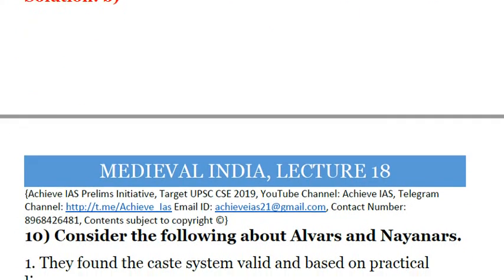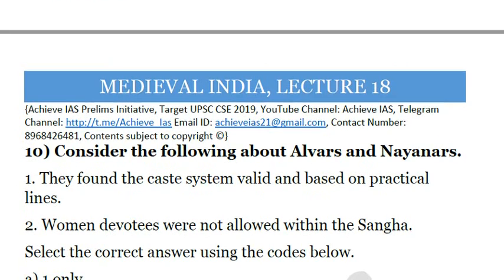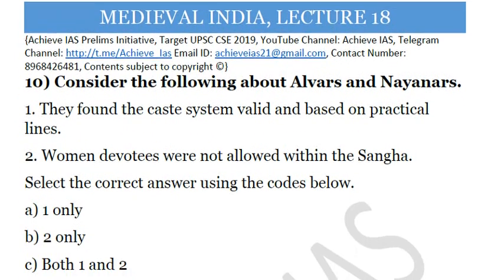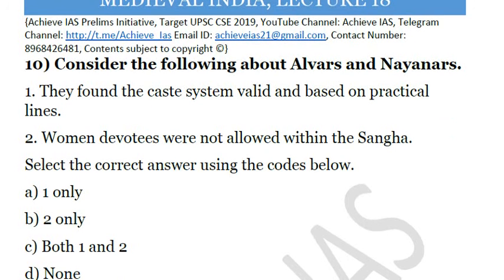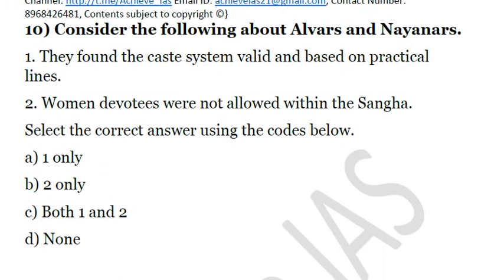The last question: consider the following about Alvars and Nayanars. First, they found the caste system valid and based on practical lines. Second, women devotees were not allowed within the sangha. Both statements are wrong — in fact they rejected the caste system, and there were some women Alvars as well. The answer is D: none.